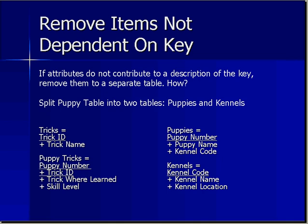The third step: remove items not dependent on the key. If an attribute does not contribute to a description of the key, remove it to a separate table. Looking at the puppy table, it's got a bunch of kennel information, so we're going to split that into two tables. We still have tricks and puppy tricks, but in the puppy table we now have the puppy identification number, the puppy's name, and a kennel code. The kennel code is a reference to the new kennels table, which contains the kennel name and kennel location together with the kennel identification code — the primary key and unique identifier for kennels.